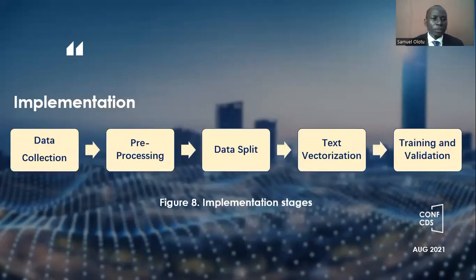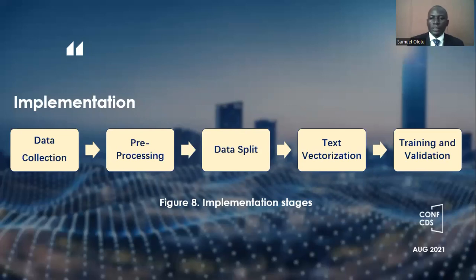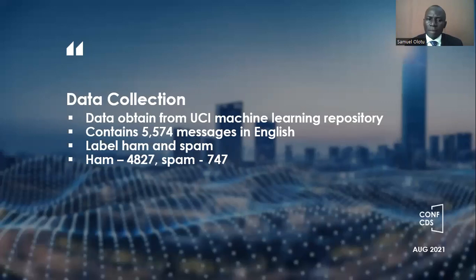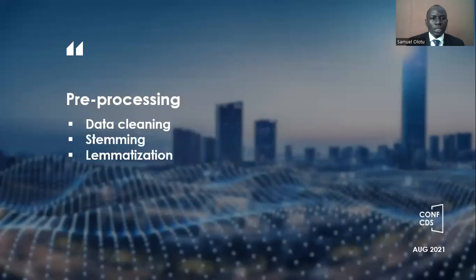The implementation of this work is carried out in a number of stages: data collection, pre-processing, data split, text vectorization, and training and validation. The text is collected from the UCI machine learning repository online and contains about 5,574 messages in English language. These messages are labeled either HAM or SPAM — we have 4,827 as HAM, while the remaining 747 are labeled as SPAM, and they are mixed in the dataset.